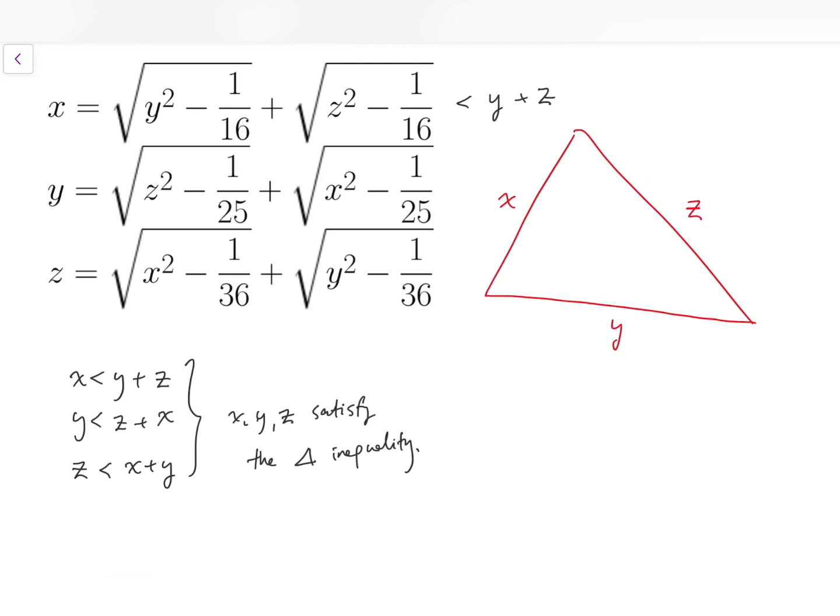Now from this, because we know that, for example, from the second equation, let's take y equals the sum of those two square roots. I can tell that the altitude corresponding to the side with length y should have length equal to one-fifth.